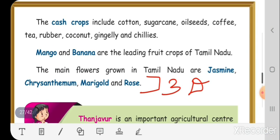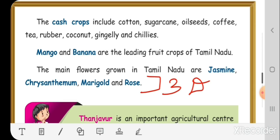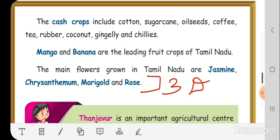Next, the cash crops include cotton, sugarcane, oilseeds, coffee, tea, rubber, coconut, gingelly, and chilies. Mango and banana are the leading fruit crops of Tamil Nadu.